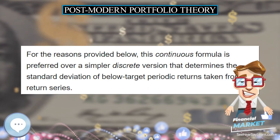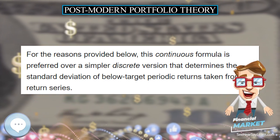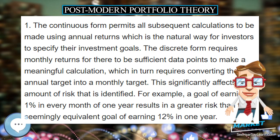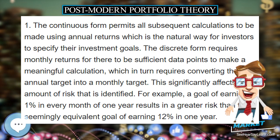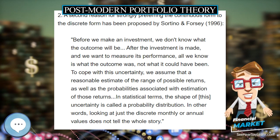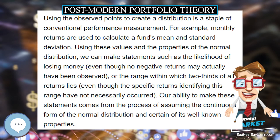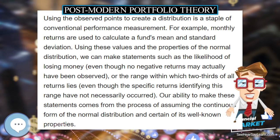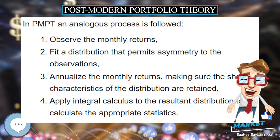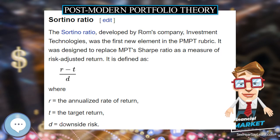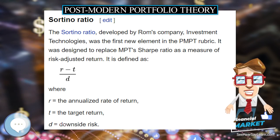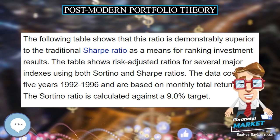Thus, with the recent advent of hedging and derivative strategies, which are asymmetrical by design, MPT measures are essentially useless, while PMPT is able to capture significantly more of the true information contained in the returns under consideration. Many of the common market indices and the returns of stock and bond mutual funds cannot themselves always be assumed to be accurately represented by the normal distribution. Data: monthly returns, January 1991 through December 1996.